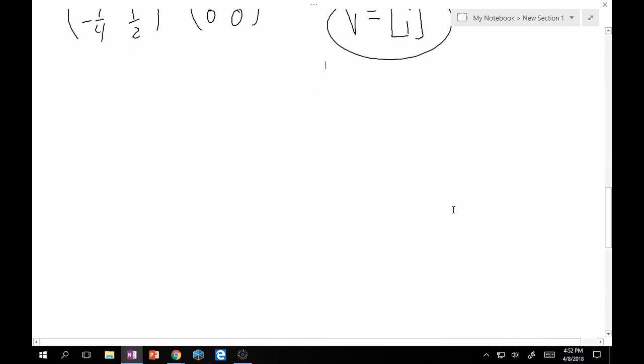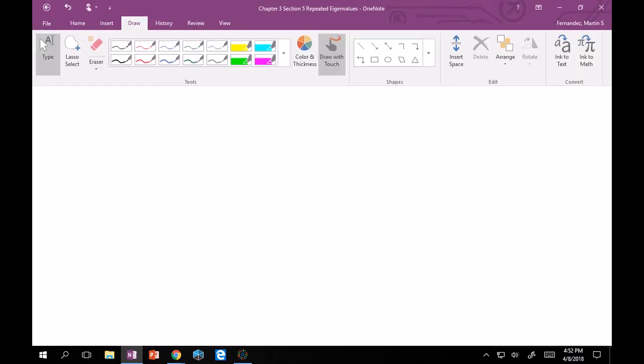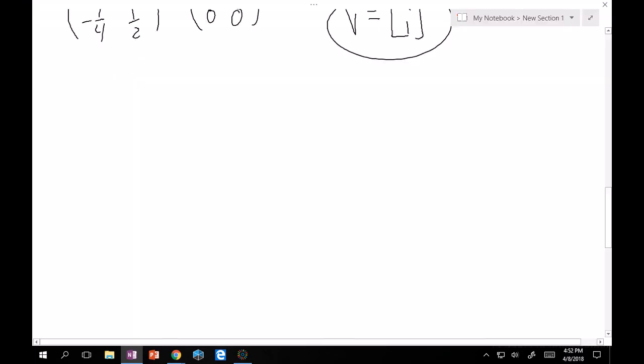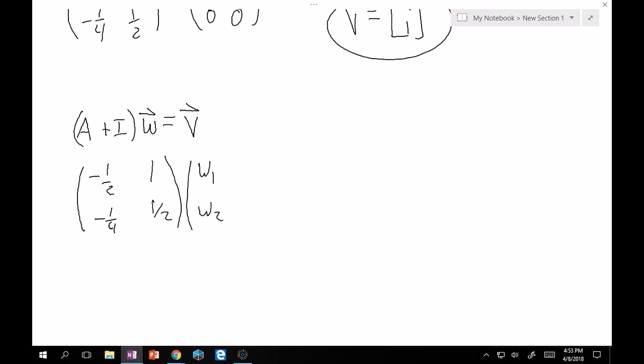Good. Now, we need to find that little W vector, right? Okay. So, that's set up as A minus lambda I. So, that's A plus I because our lambda was negative 1 times W must equivalently equal V. Okay. A plus I was minus 1 half, 1, minus 1 fourth, 1 half, times W, which I'll write as W1, W2, has to equal what we got for our eigenvector, which was 2, 1.